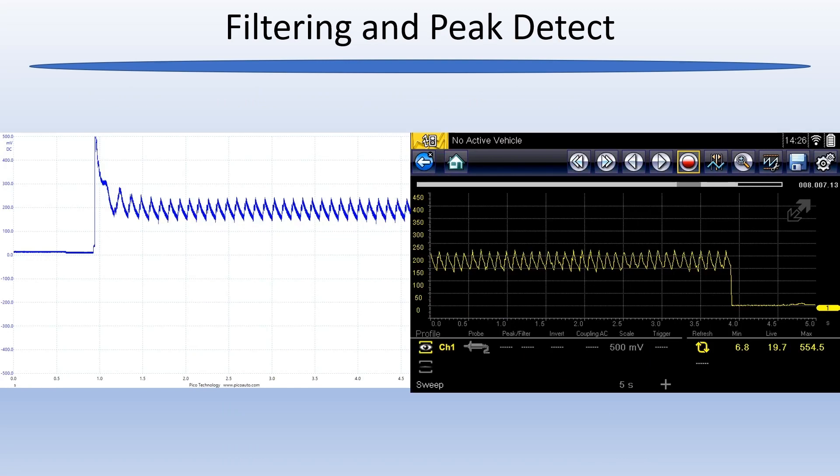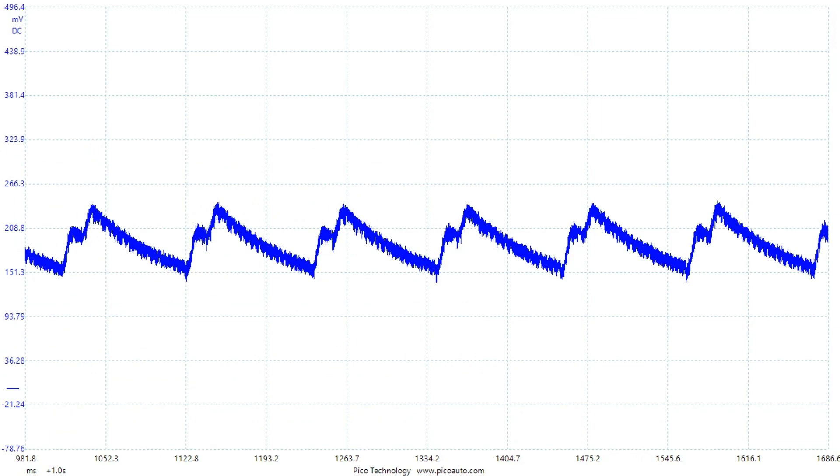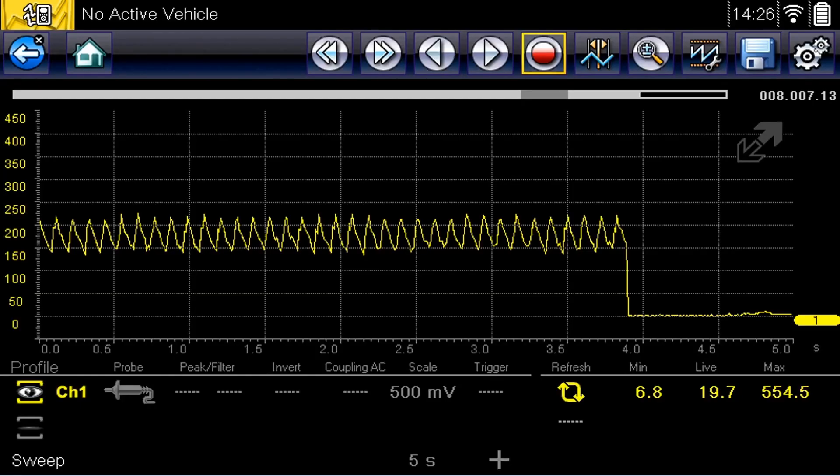Let's look at two relative compression captures from my work van, which is a 2015 Transit Connect. Even zoomed out, you can see the snap-on capture looks much cleaner. Zoomed in, you can see the Pico capture is a lot fatter. The snap-on trace is a lot thinner, probably only one pixel wide.